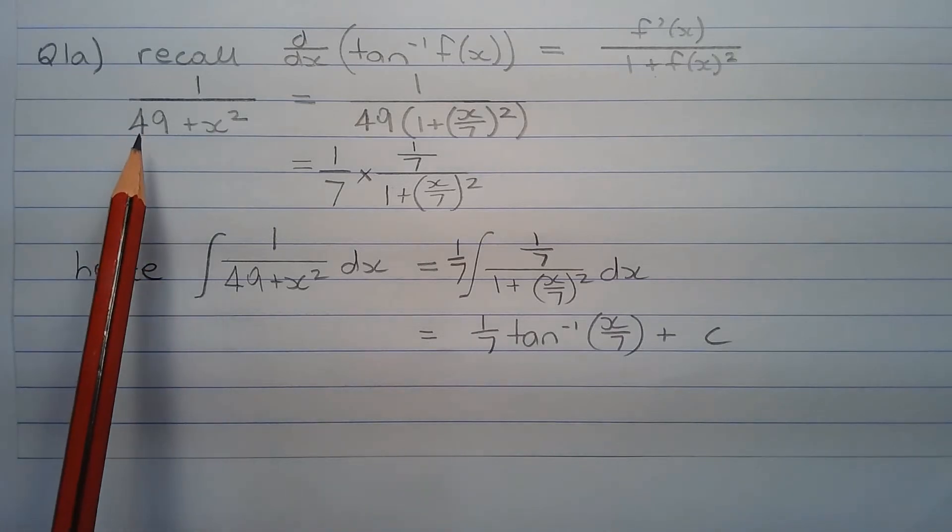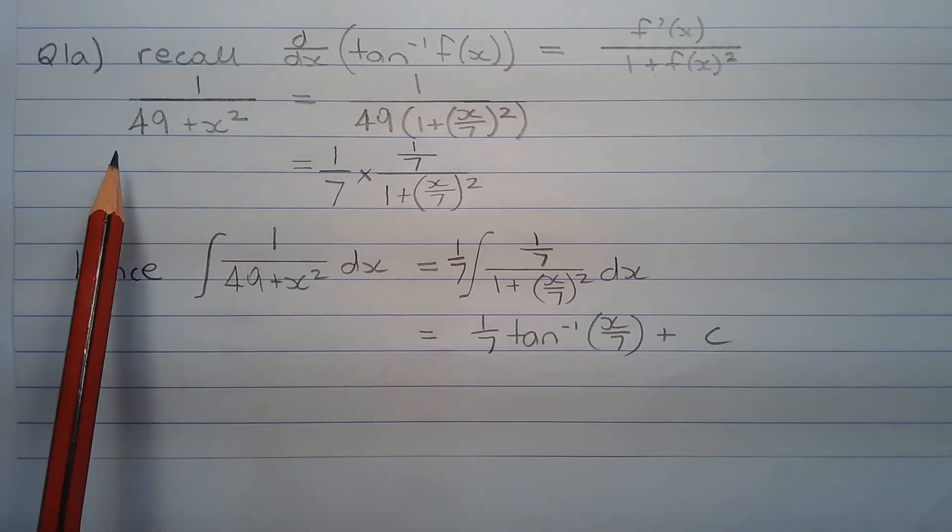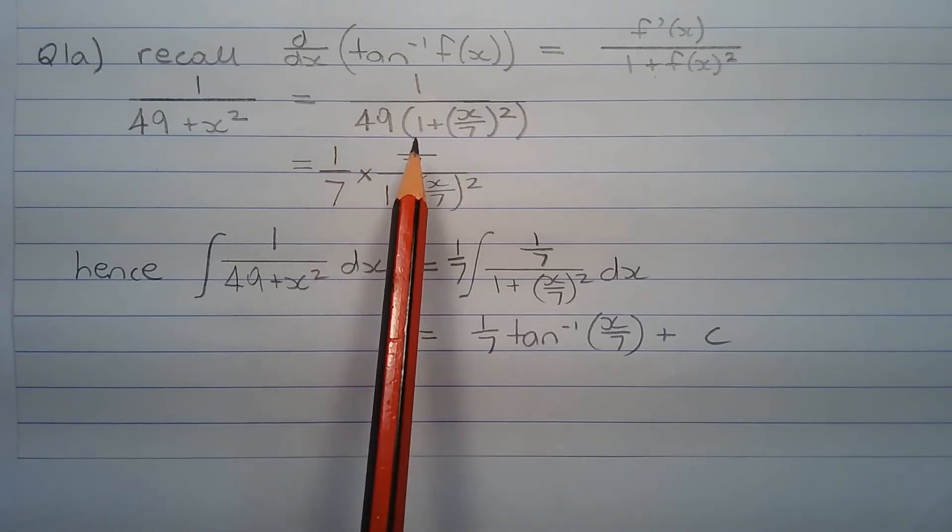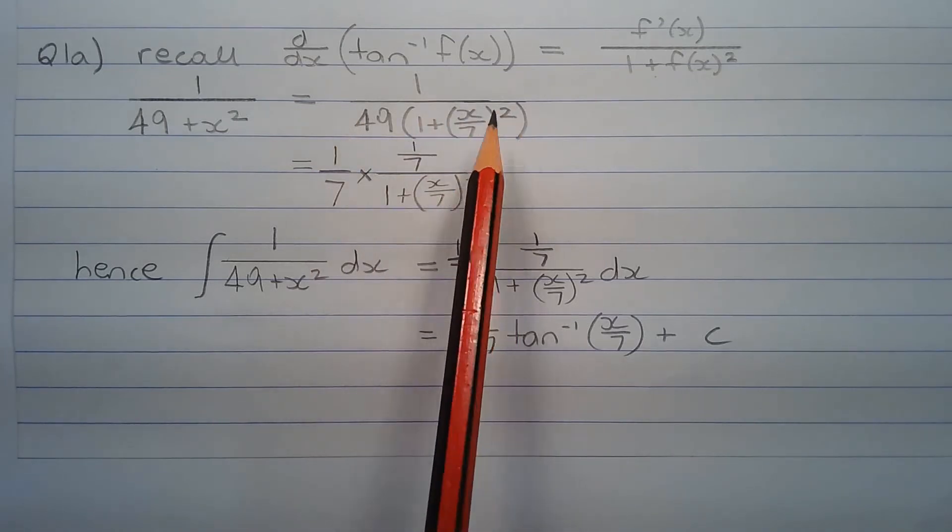We're going to do that by factorizing out 49 from the denominator. That equals 1 over 49 multiplied by 1 plus x over 7 squared in brackets.